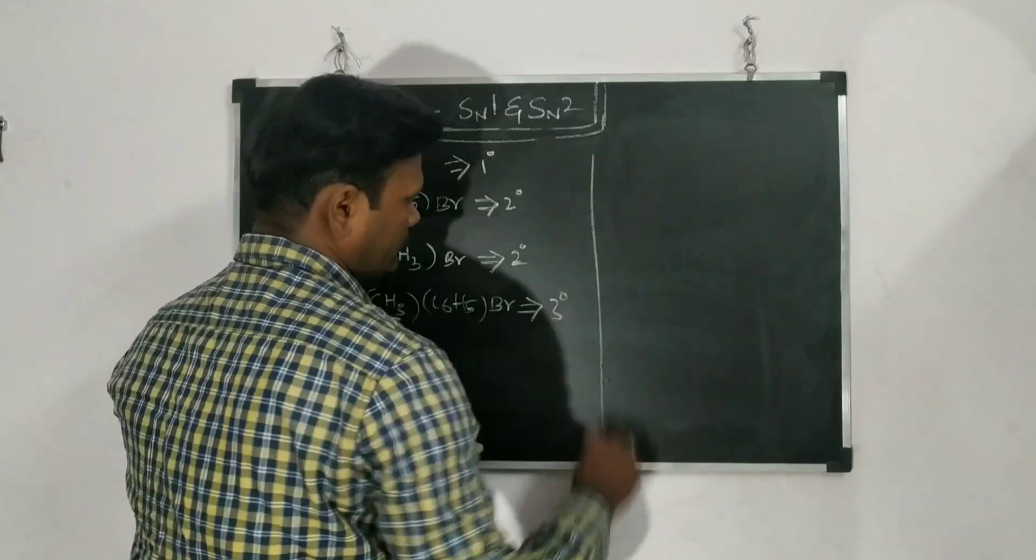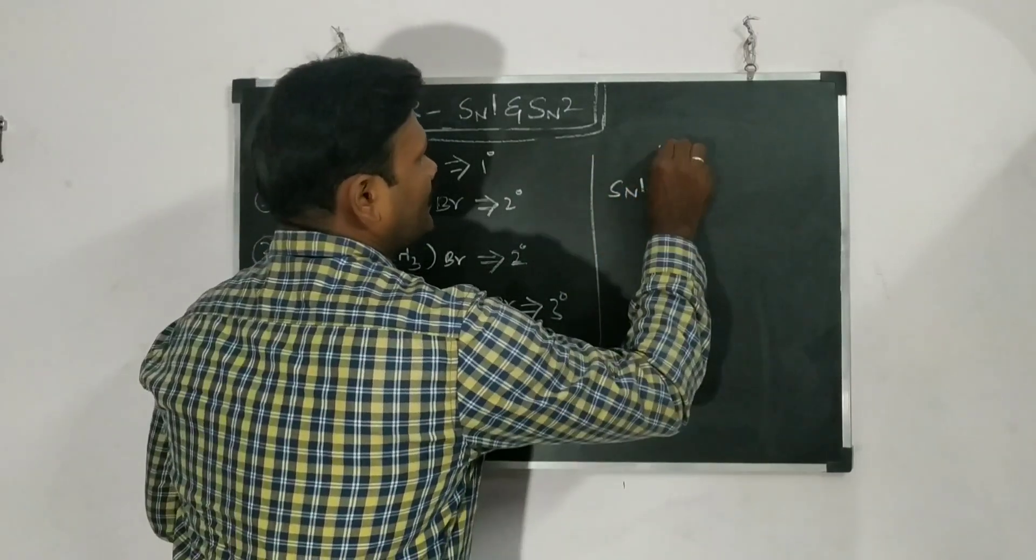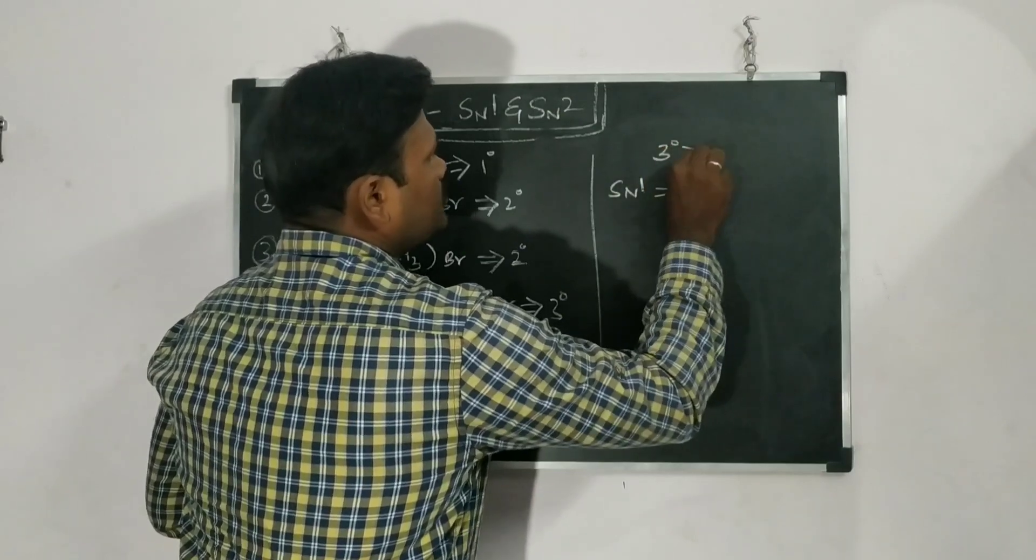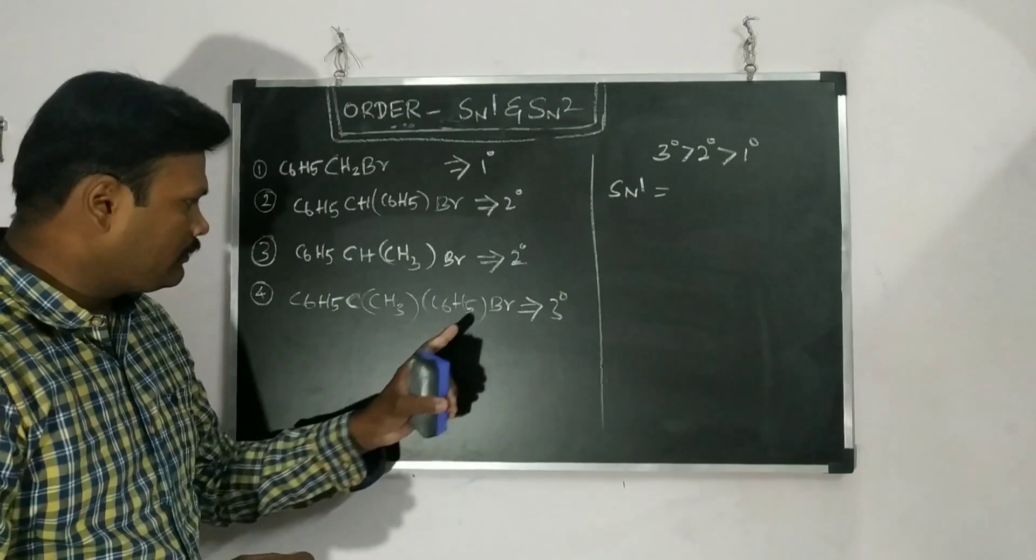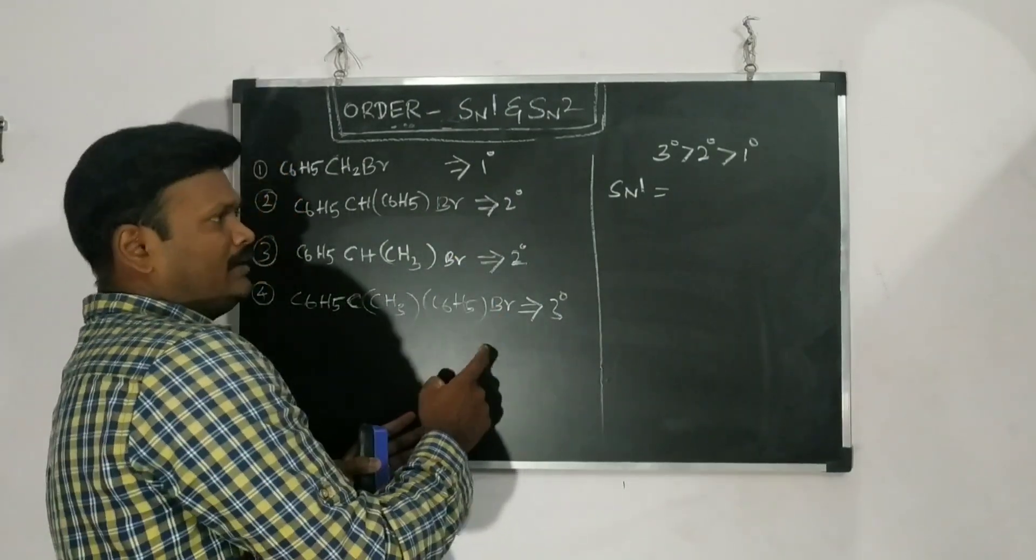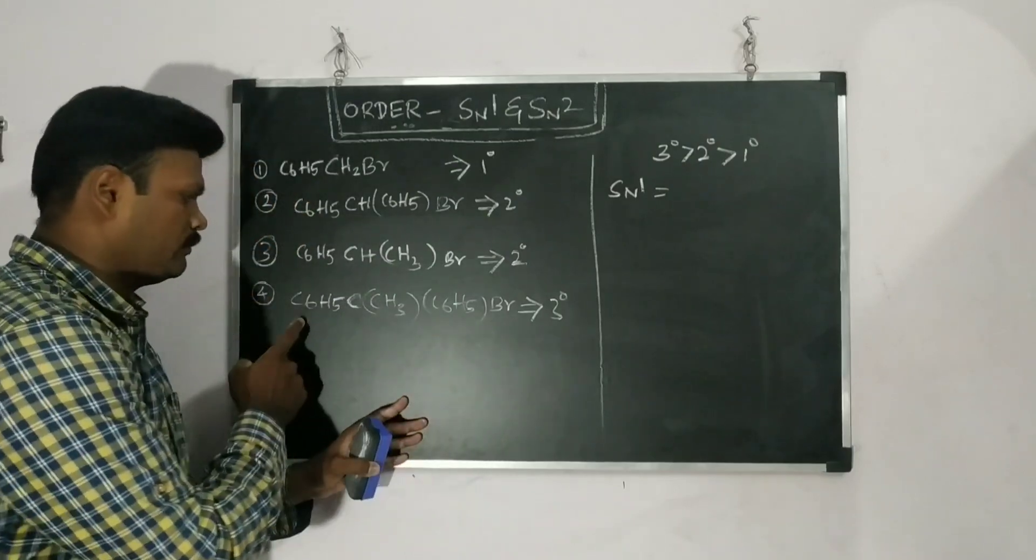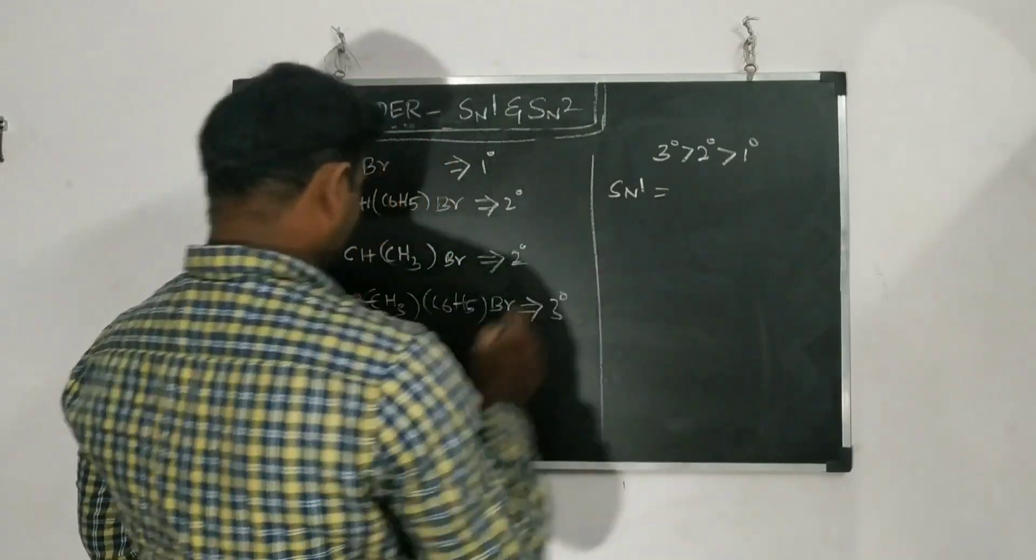As usual SN1 reactivity. How we can see? So here SN1. So what kind of reactivity order? 3 degree and 2 degree. And finally 1 degree. This order should be followed. So as per this law, what about this thing? So this will react very fast between SN1. SN1, this compound will react very faster. How we can see? So this is 3 degree.